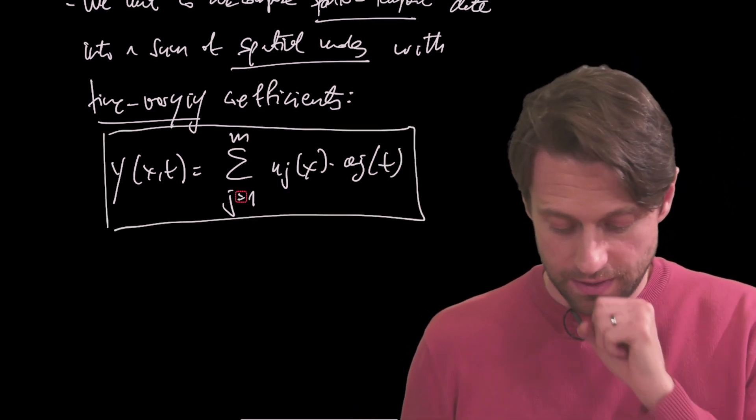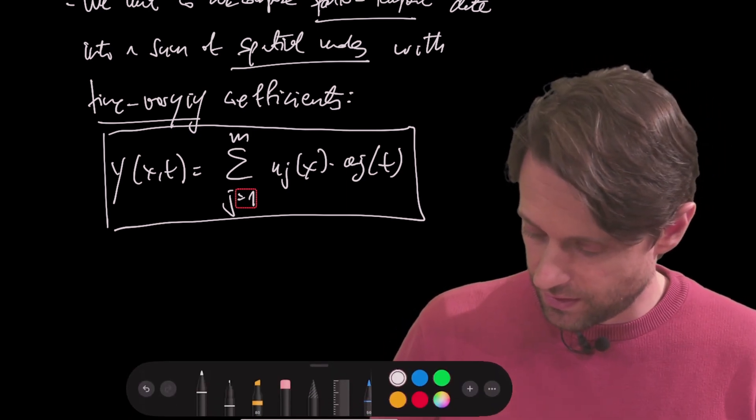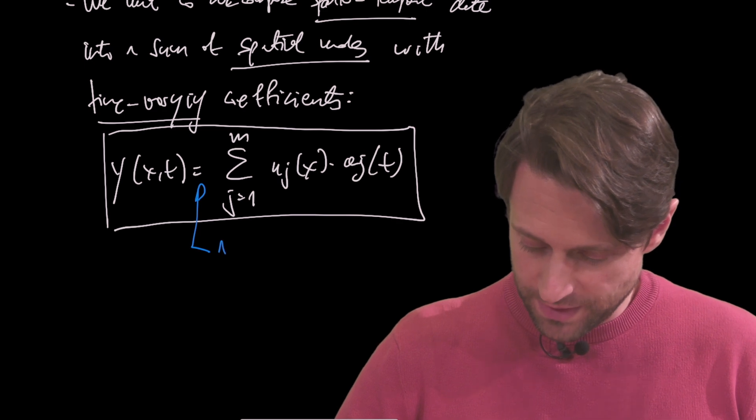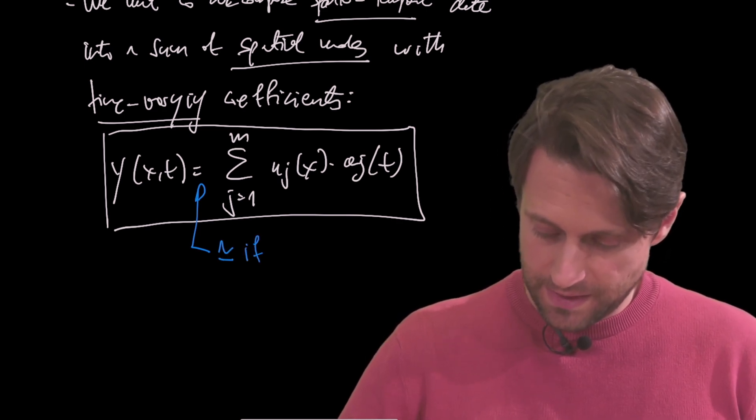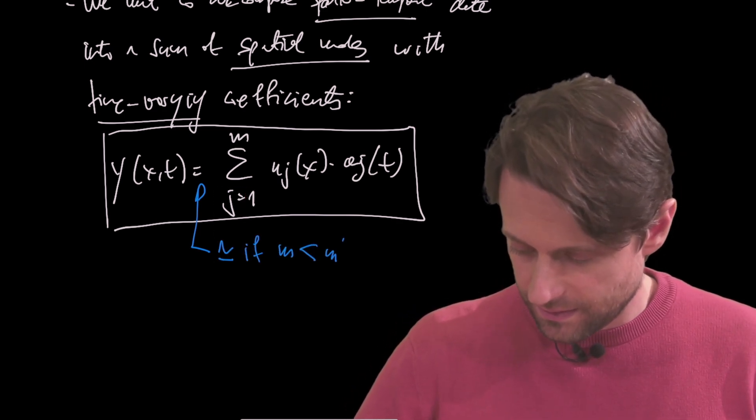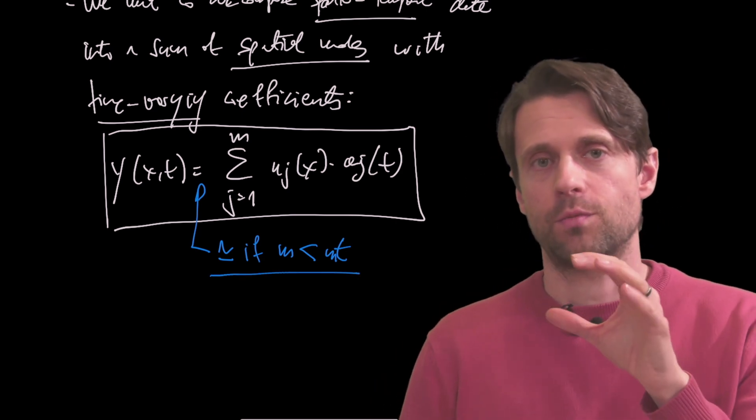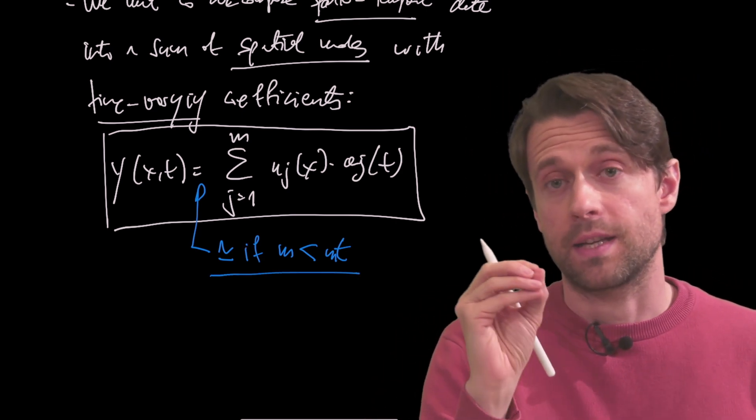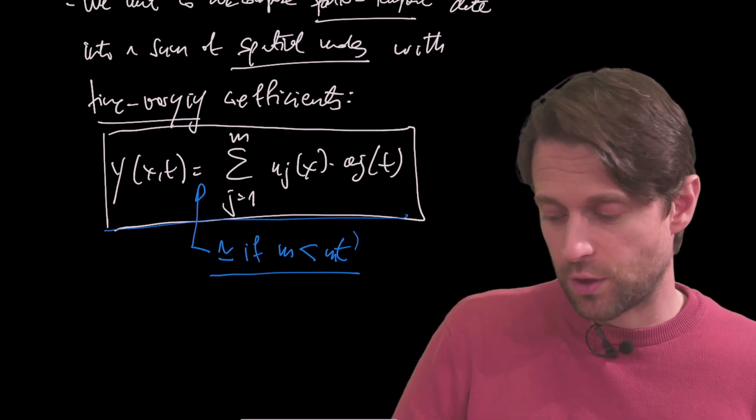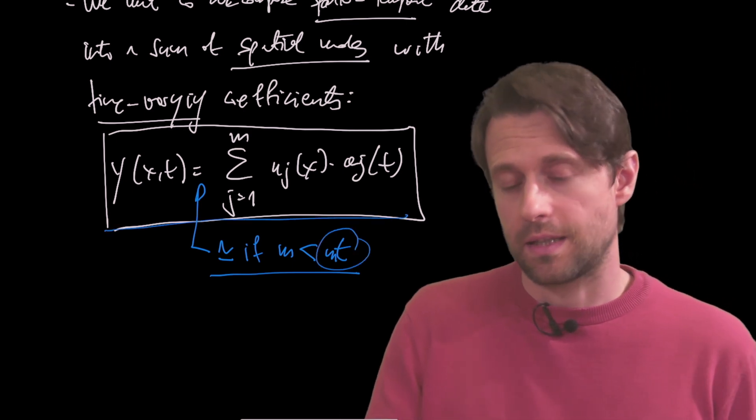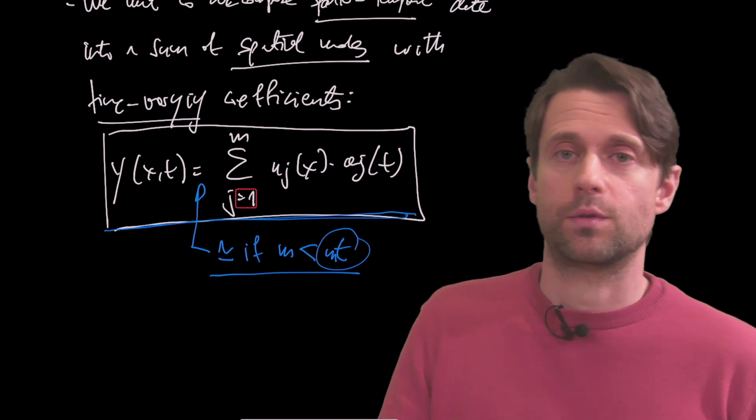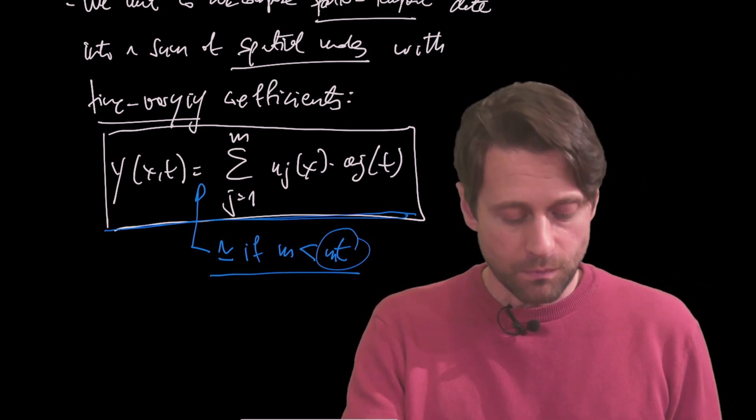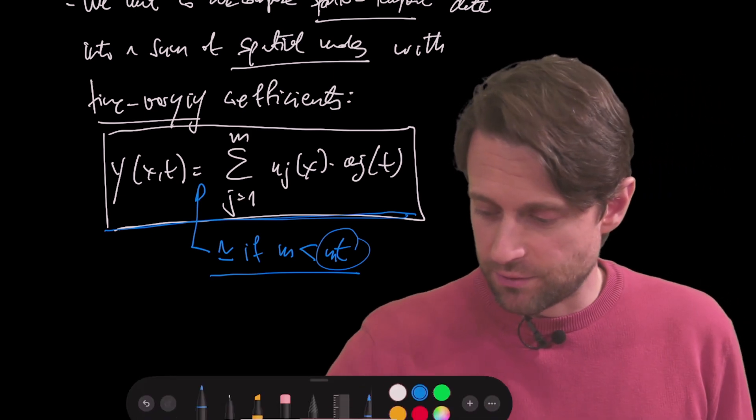Now, important clarification here: this equal becomes an approximate if m is smaller than n_t in general. I mean there are some nuances to this, but let's assume for now, if the number of modes that I retain in my expansion is smaller than the number of snapshots, then this will not be able to be an equal sign. We're basically truncating, as we have explained before.